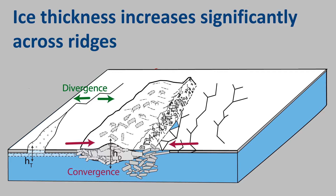Over ridges, CIS thickness increases significantly. In this way, convergence creates a thick ice cover that is more likely to survive another Arctic summer. Because of this strong link between ice thickness and deformation, CIS deformation is a crucial process we need to consider when modeling future Arctic CIS properties.